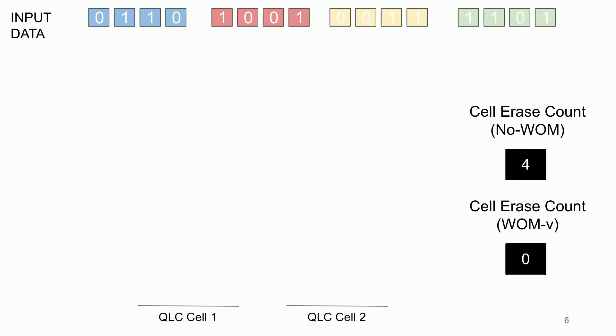Now let's revisit our input data and see how this input data is now written in the context of a WOM V coding scheme. So first, before storing any input data, we will have to erase the data from two QLC cells, cell one and cell two. This increases the cell erase count in WOM V configuration to two.